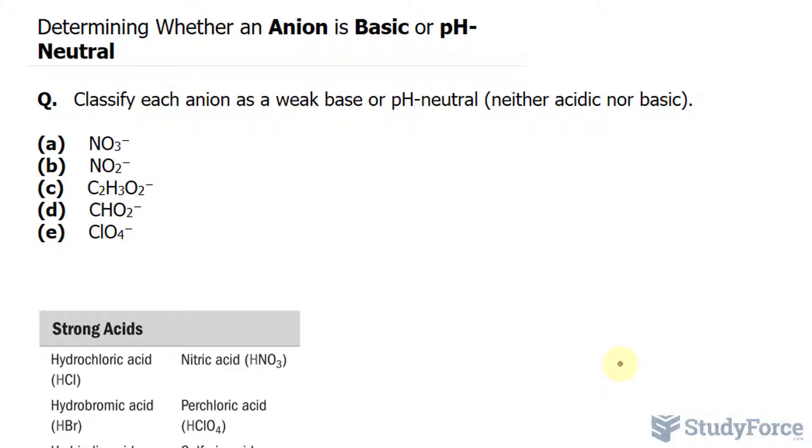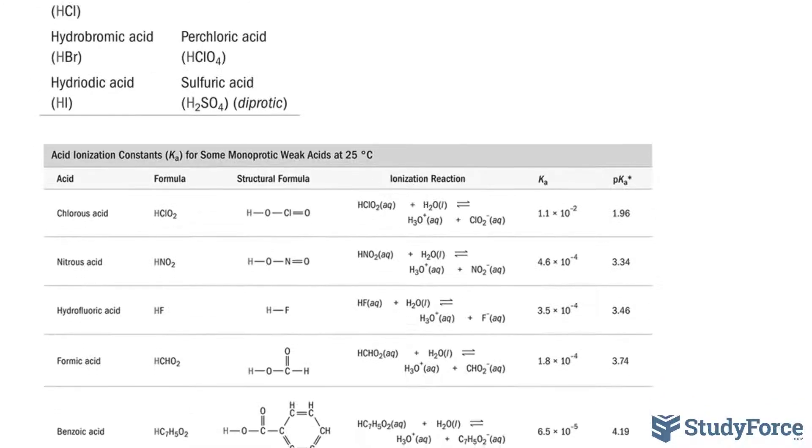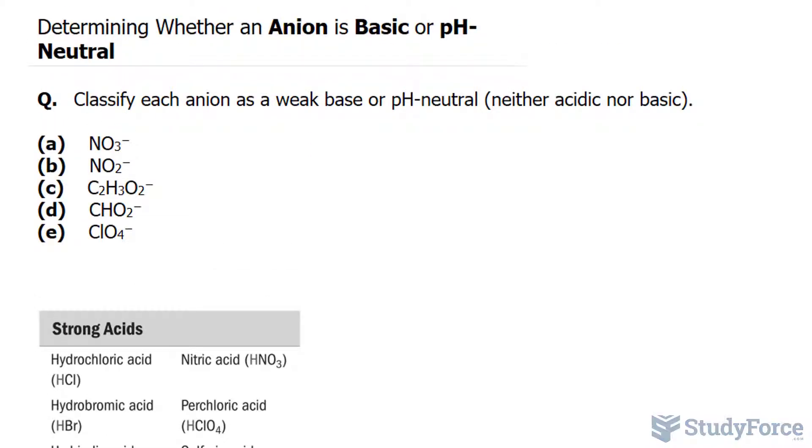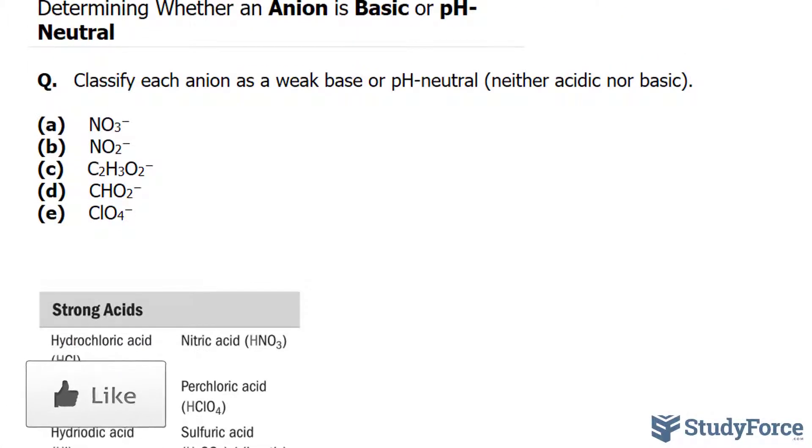So starting with A, we have NO3-. Take a look at these two charts. We have one chart for strong acids and one chart showing all the weak acids. The anion here, NO3-, is not found in this chart, which suggests that it is coming from a strong acid. In fact, if you look right here, NO3- is a derivative of HNO3.